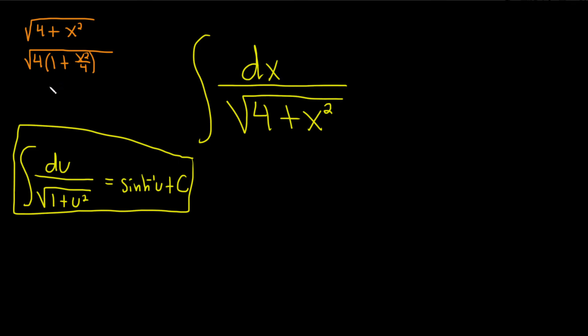All right, we can do that, right, because we're pulling out a 4. Then we can break it up into two square roots like this, square root of 4 times square root of 1 plus x squared over 4. The square root of 4 is 2, so then we have 1 plus, and then we can write this as x over 2 squared. And I'm doing that, I'm writing x squared over 4 as x over 2 squared so we can make our u.